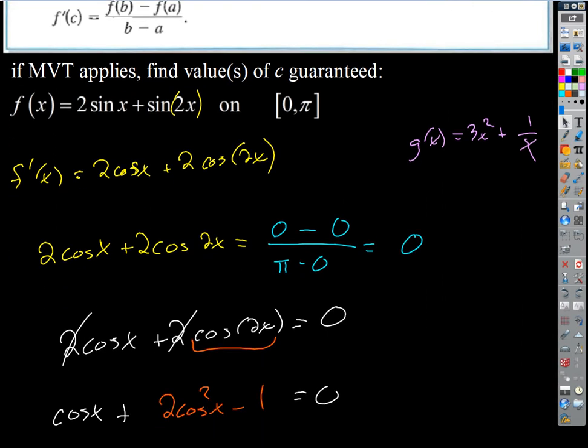We were given this function on an interval. Remind me real quick — what are the criteria for the mean value theorem? The function has to be smooth. It has to be continuous on the closed interval and differentiable on the open interval. This one is clearly, we can just look at this by inspection — we've got sine functions, so it's continuous everywhere. When we take the derivative, we've got cosine functions. No problems there. So we meet the criteria.